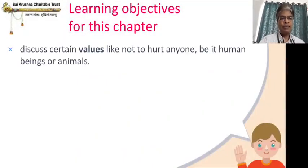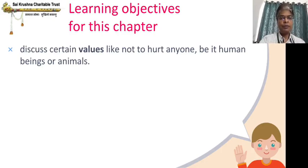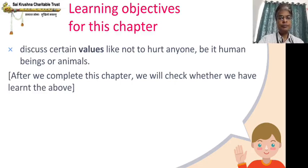The third learning objective is values. In this chapter, we are going to learn: do not hurt anyone — be it human beings or animals. We should not hurt human beings and we should not hurt animals also. That is the value we are going to learn from this chapter. We will discuss it, and after we complete this chapter in the conclusion part, we will check whether we have learnt the above.